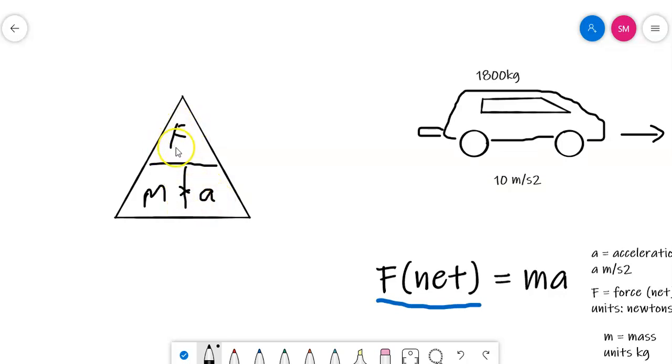So when we're working out F, we've got M times A. If we're trying to work out A, then it's going to be F divided by M. If we're trying to work out M, then it's F divided by A.